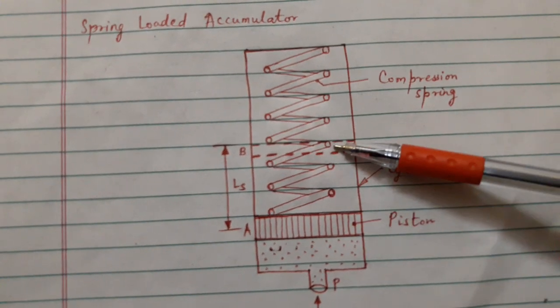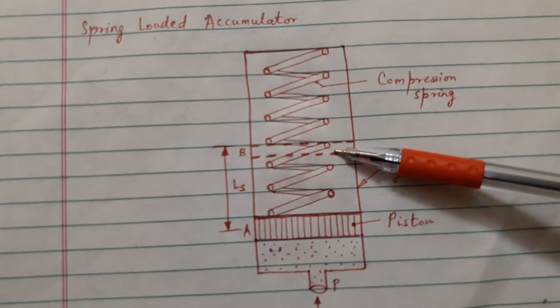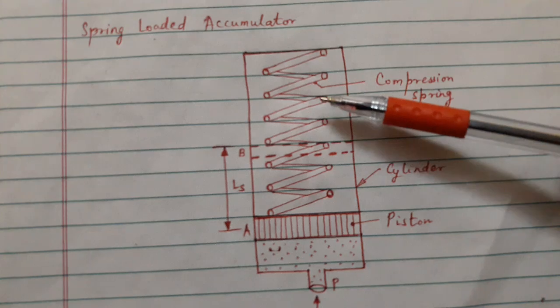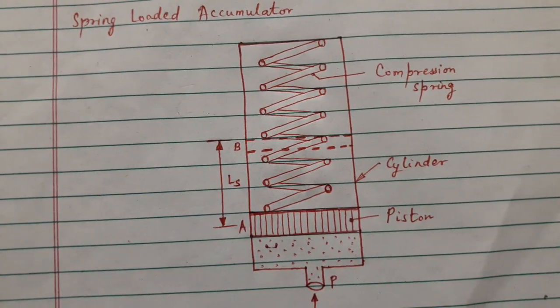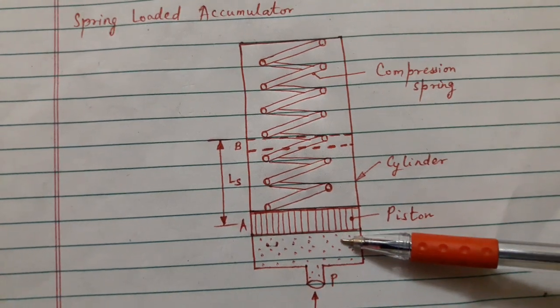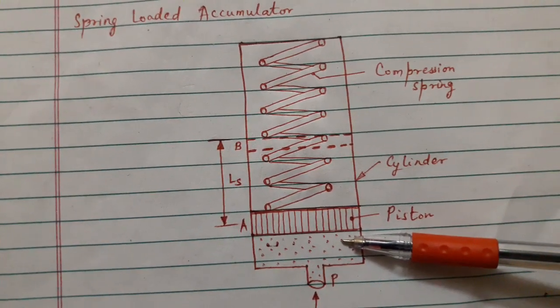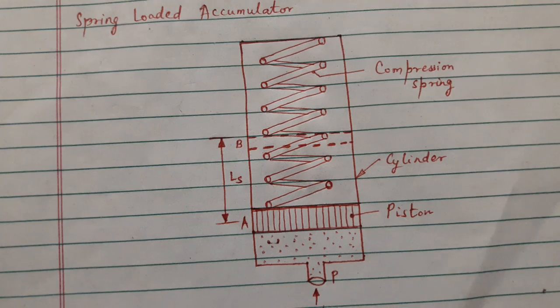When the piston reaches point B by fully compressing the spring, the accumulator is said to be fully charged. Now the oil in the cylinder will be having pressure energy due to the resilience of the spring.